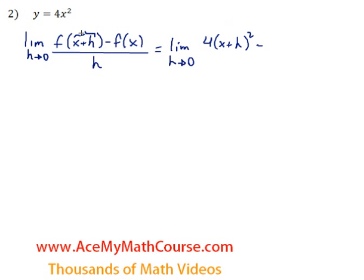Then all we need to do is subtract f of x, which is of course 4x squared. And remember that y is f of x, right? Hopefully that makes good sense to everyone. Down below we just have the h.